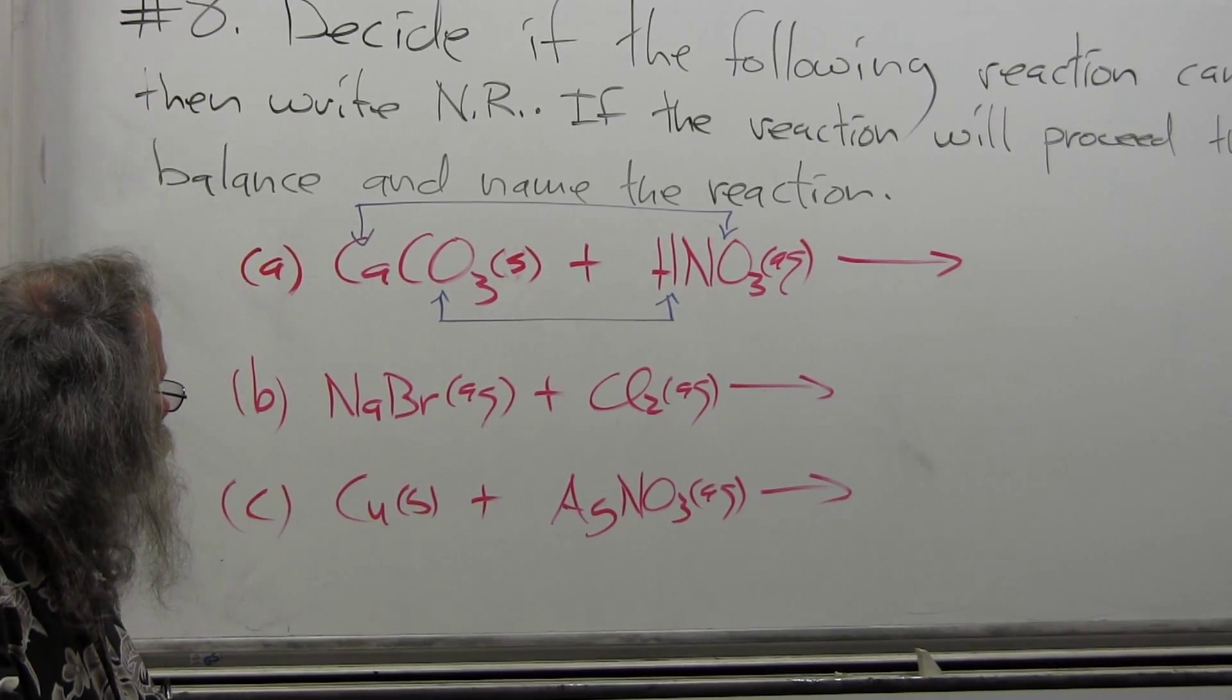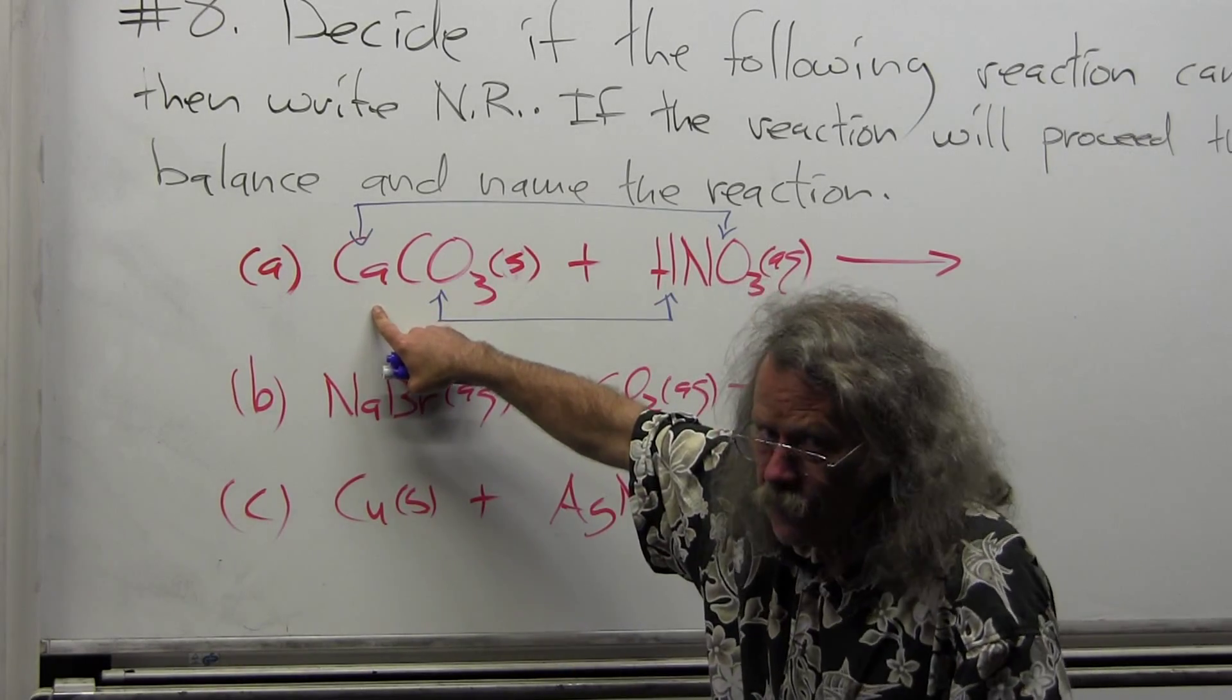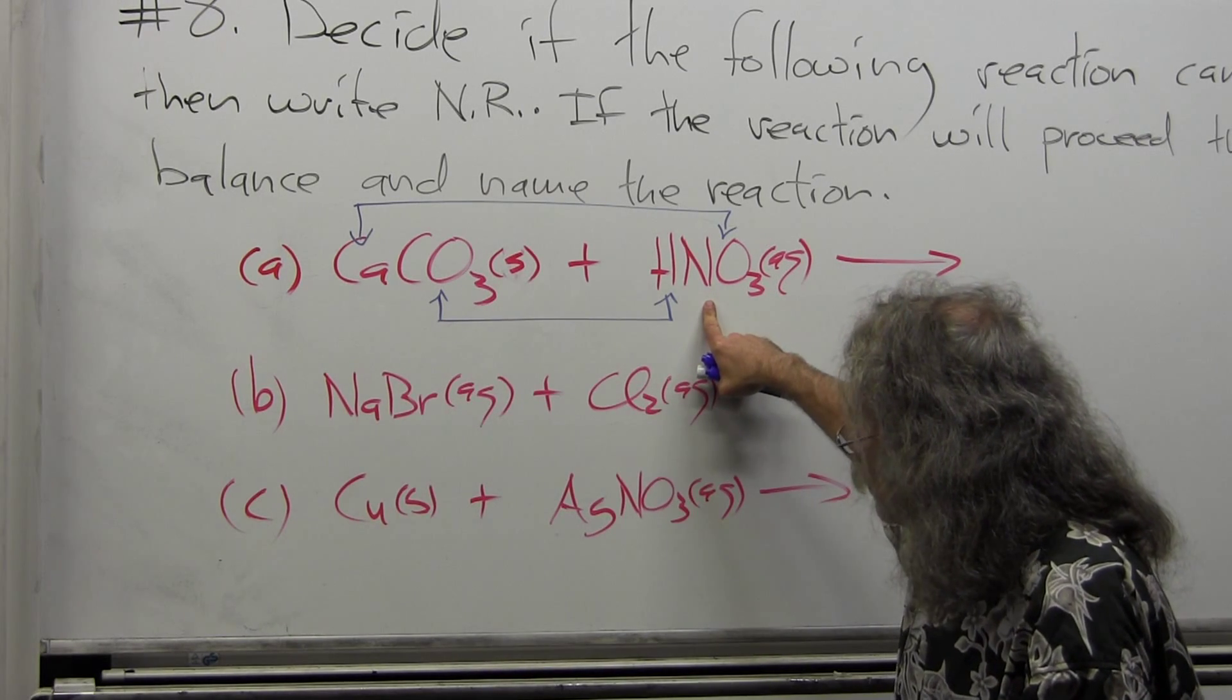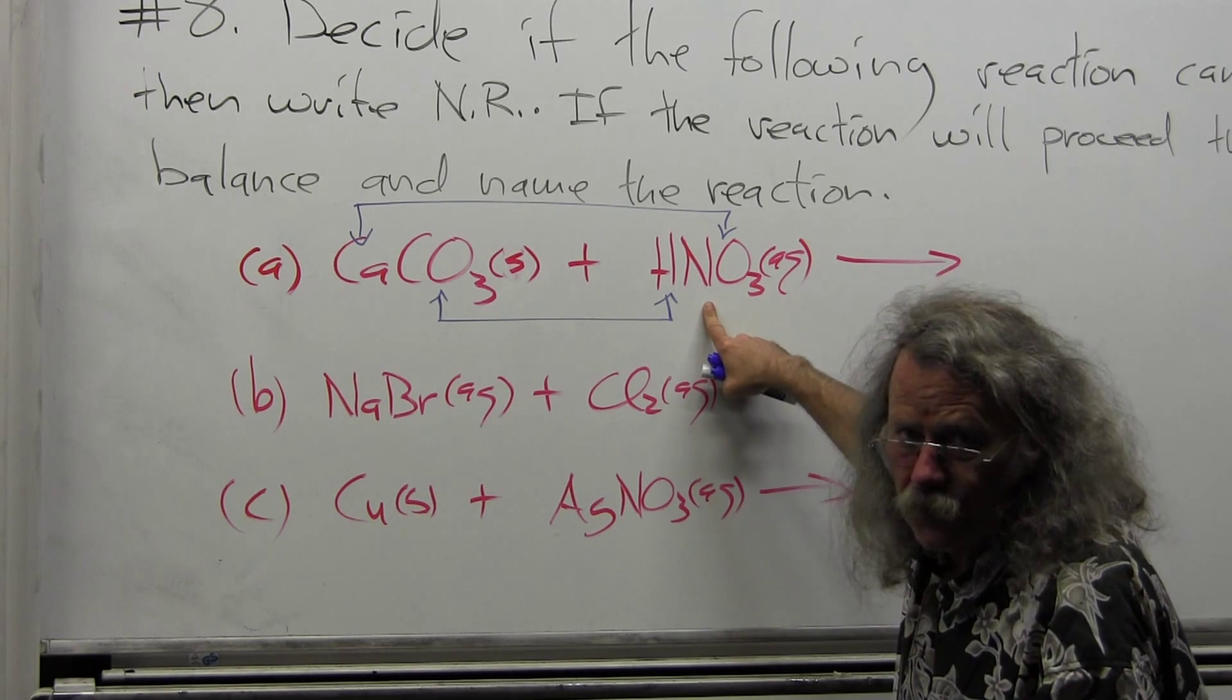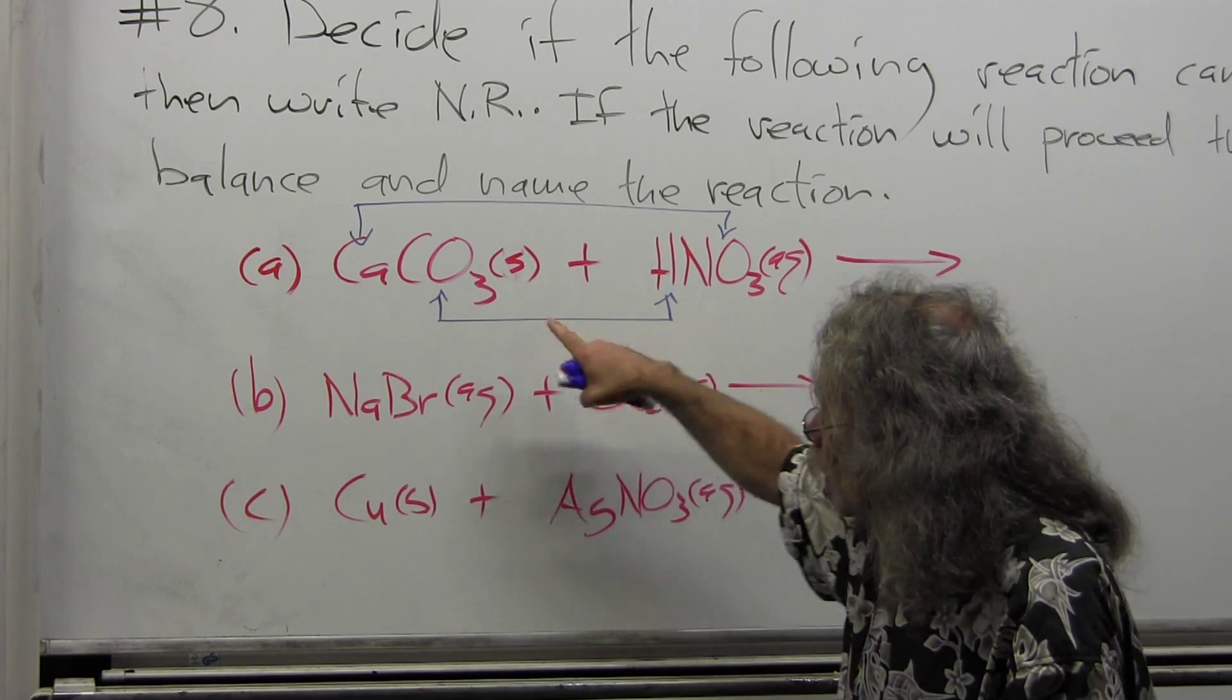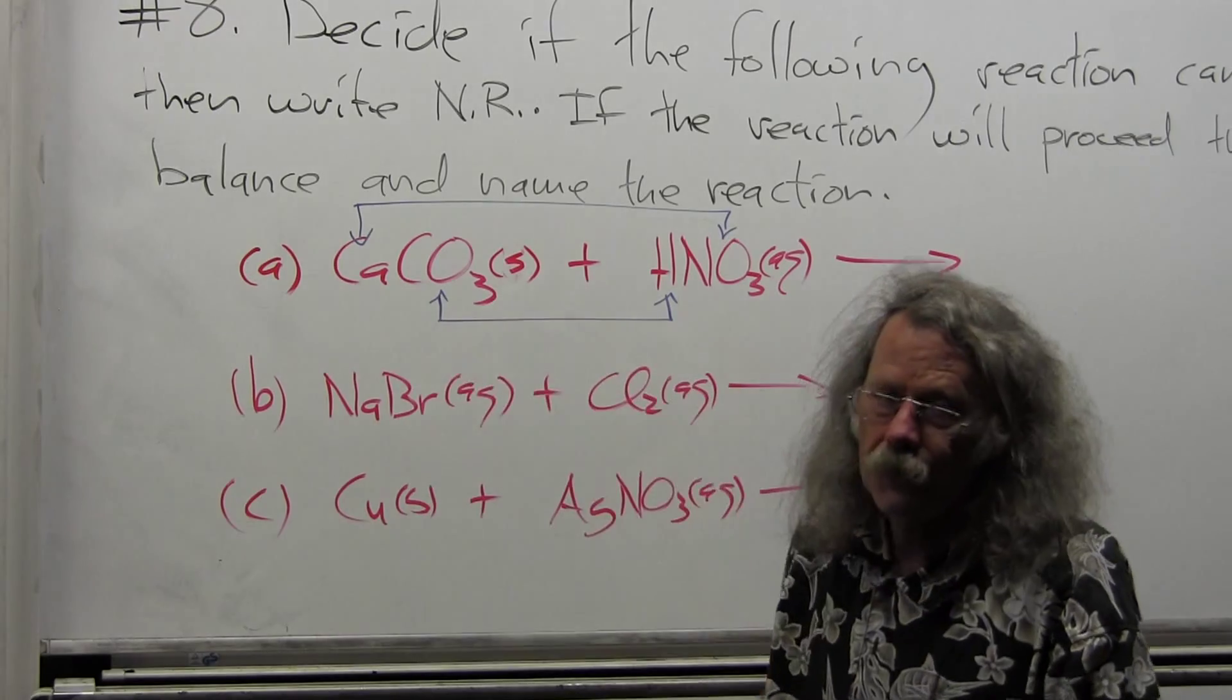I'm looking at the outer pair. I have calcium, which I don't have a specific rule for, and I have nitrate ions. The calcium plus two, it doesn't matter what it is, because nitrates, all nitrates are soluble. So I'm not going to get any sort of precipitation reaction here. Now I look at the inner pair, and the inner pair, I see a hydrogen ion and a carbonate ion.